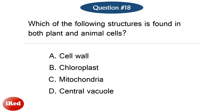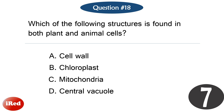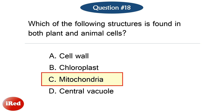Question number eighteen. Which of the following structures is found in both plant and animal cells? The correct answer is letter C, mitochondria.